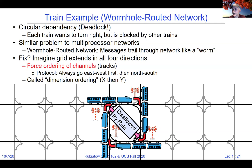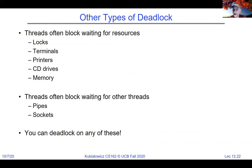There are many other types of deadlocks. Threads can block waiting for resources like locks, terminals, printers, drives, and memory. Threads might be blocked waiting for other threads through pipes and sockets. You can deadlock on pretty much anything — all it requires is getting some sort of cycle involved. So we might want to figure out how to avoid these kinds of deadlocks.